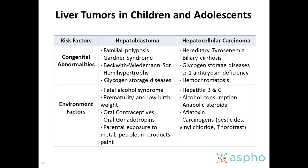Liver tumors are associated with several risk factors, whether congenital or environmental. Hepatoblastoma is associated with familial polyposis, Gardner syndrome, Beckwith-Wiedemann syndrome, hemihypertrophy, and glycogen storage diseases. Hepatocellular carcinoma is associated with hereditary tyrosinemia, biliary fibrosis, glycogen storage disease, alpha-1 antitrypsin deficiency, and hemochromatosis.